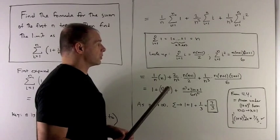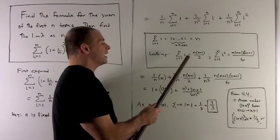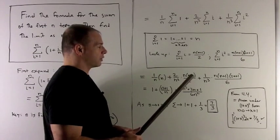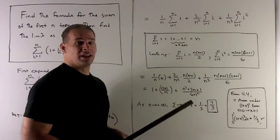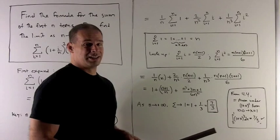For the other two, I'll need to look those up. Summation of i going from 1 to n of i is n times (n+1) over 2. Summation of i going from 1 to n of i squared is n times (n+1) times (2n+1) divided by 6.